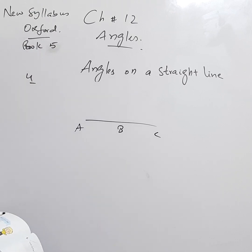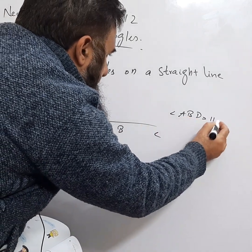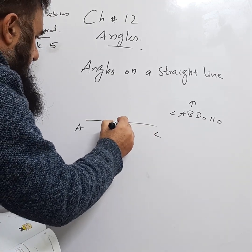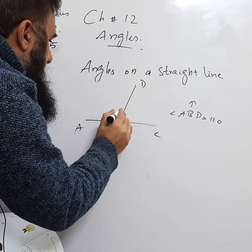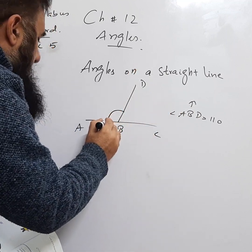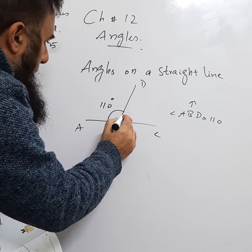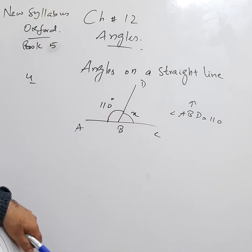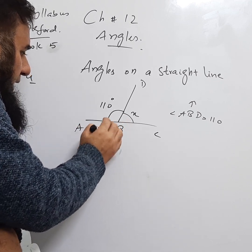They are saying angle ABD is equal to 110°. B is in the middle, and there is another line going to D. So angle ABD — this angle — is given as 110°. They are asking: what is the value of this other angle?